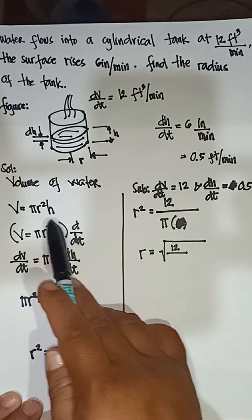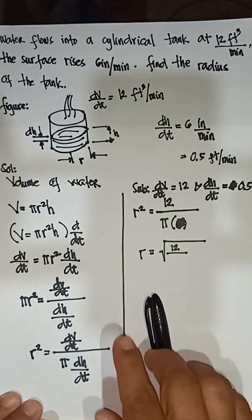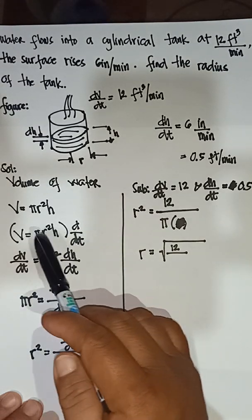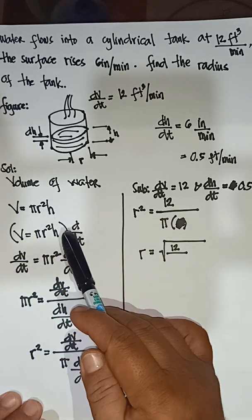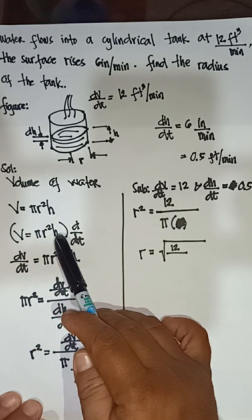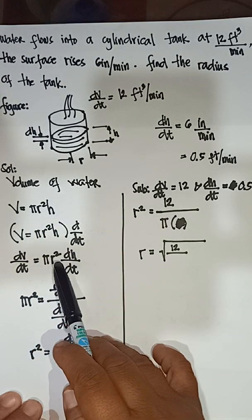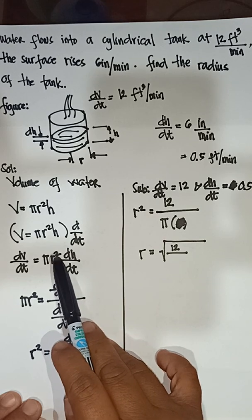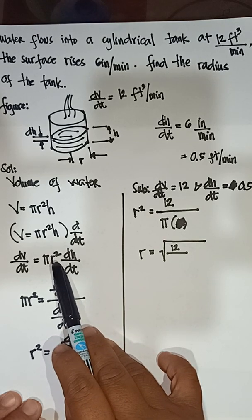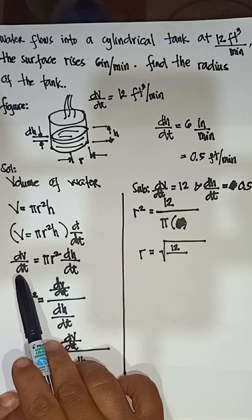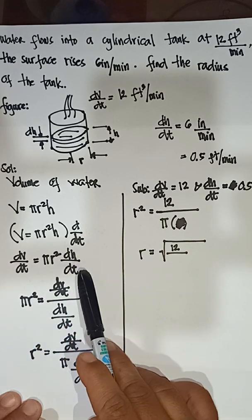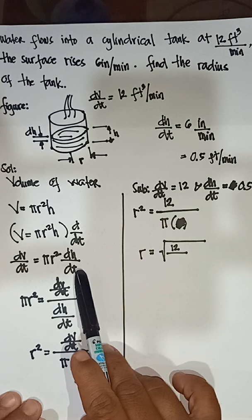Once you have that formula, you find the derivative. You find the derivative of volume and the derivative of height, but you do not find the derivative of the radius because the radius is constant. Therefore, dV/dt is equal to π r² times dh/dt.